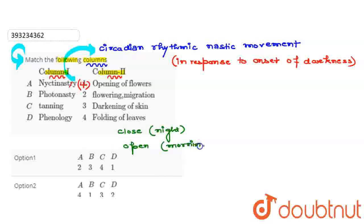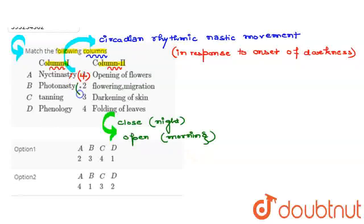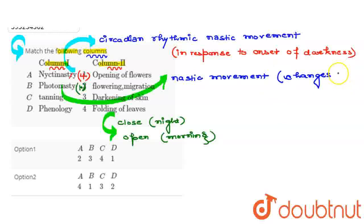After that देखेंगे second, second हमें यहाँ पे दिया गया है photonasty. तो हम इसे यहाँ पे match करेंगे with the first. Because photonasty की अगर हम बात करते हैं, तो यह भी nastic movements होती हैं, जो की associated होती हैं with the changes in light intensity. Means यहाँ पे flowers की opening होती है.